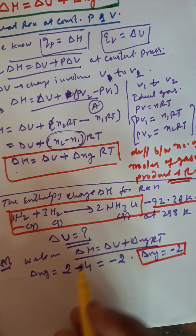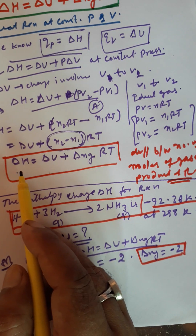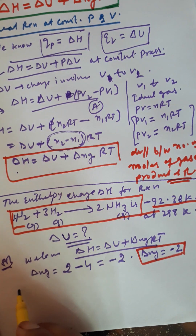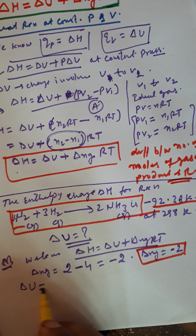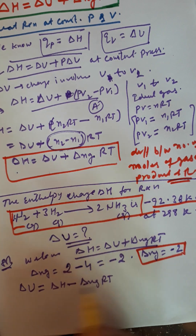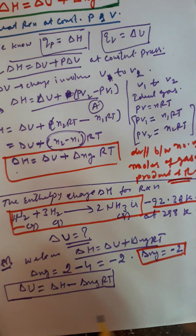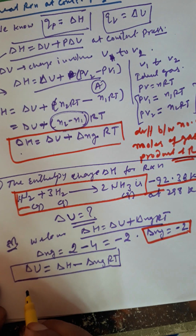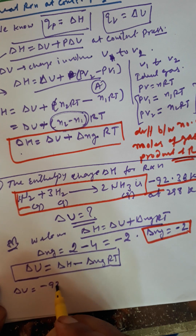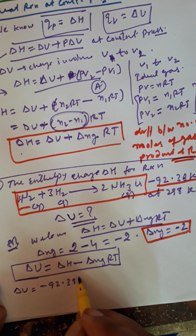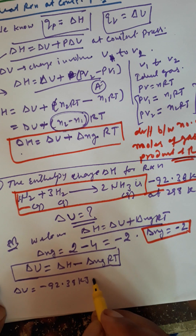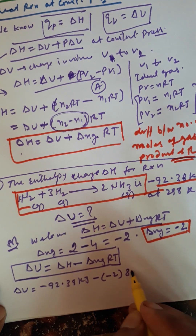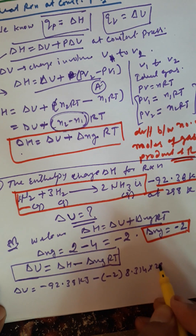अब इनको formula में डालो। ΔH दिया है, हमने ΔU निकालना है, तो formula बनेगा: ΔU = ΔH - ΔNgRT। यह तो mathematical equation है। Value put कर दो: ΔU = -92.38 kJ minus (-2) × 8.314 × 298 K। यह 8.314 R gas constant joules में है और -92.38 kilojoule में है।